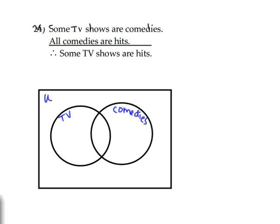For number 24, we want to draw an Euler diagram to represent this argument. It says some TV shows are comedies.